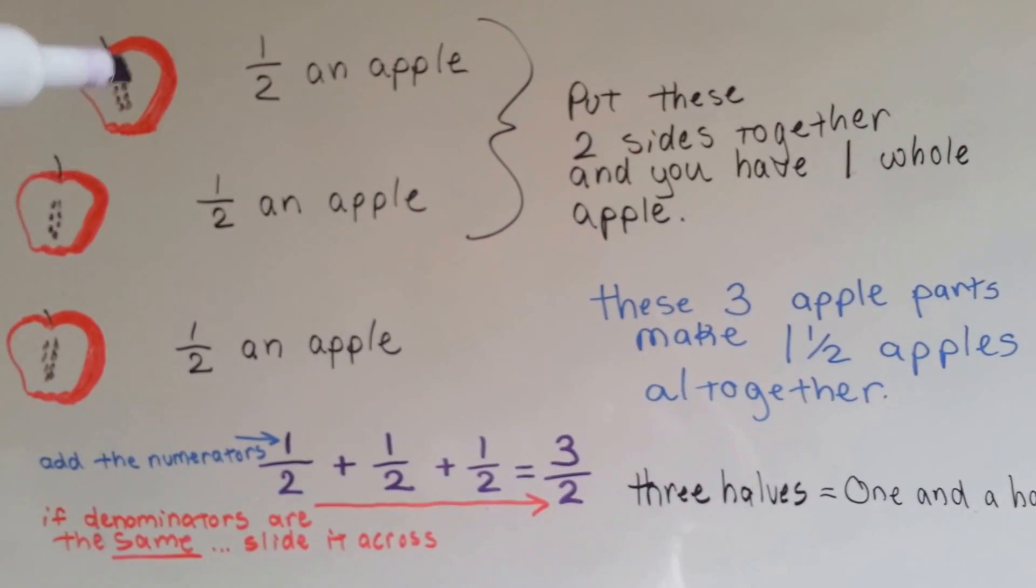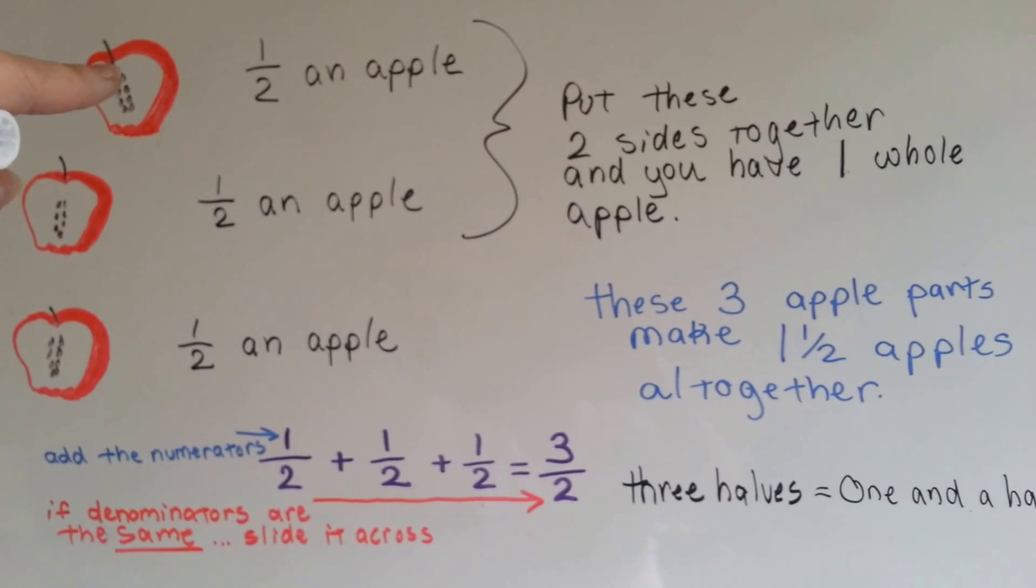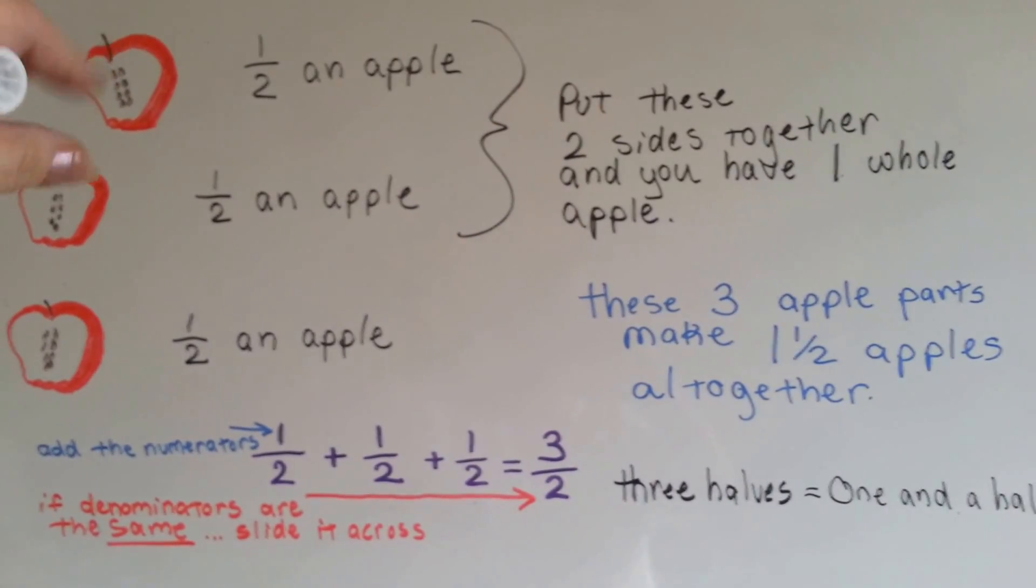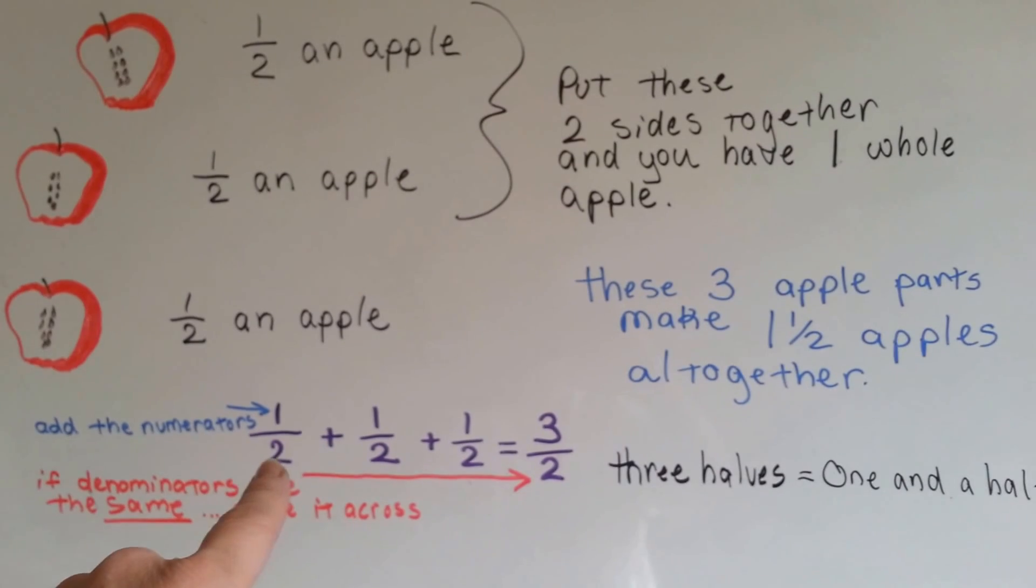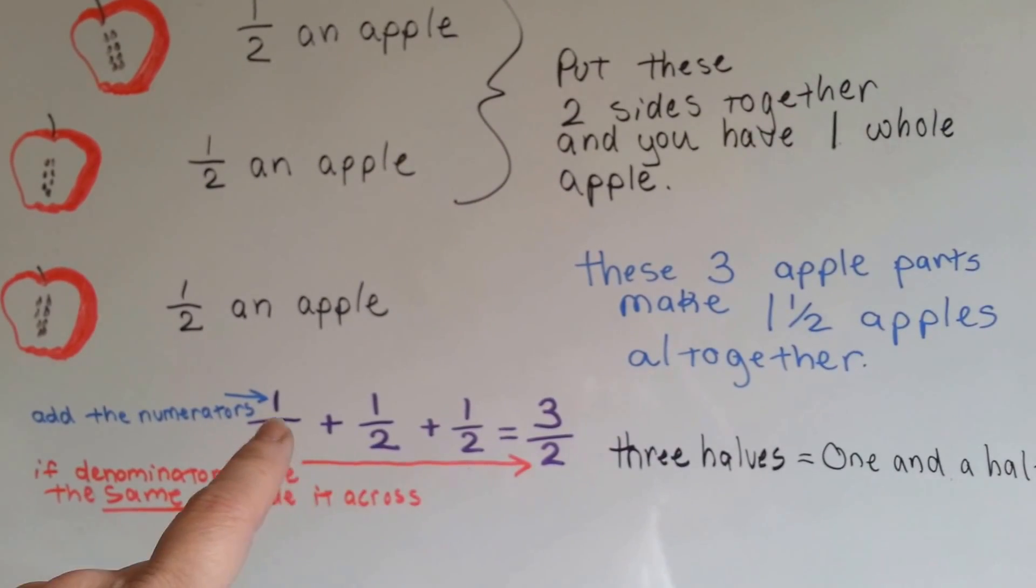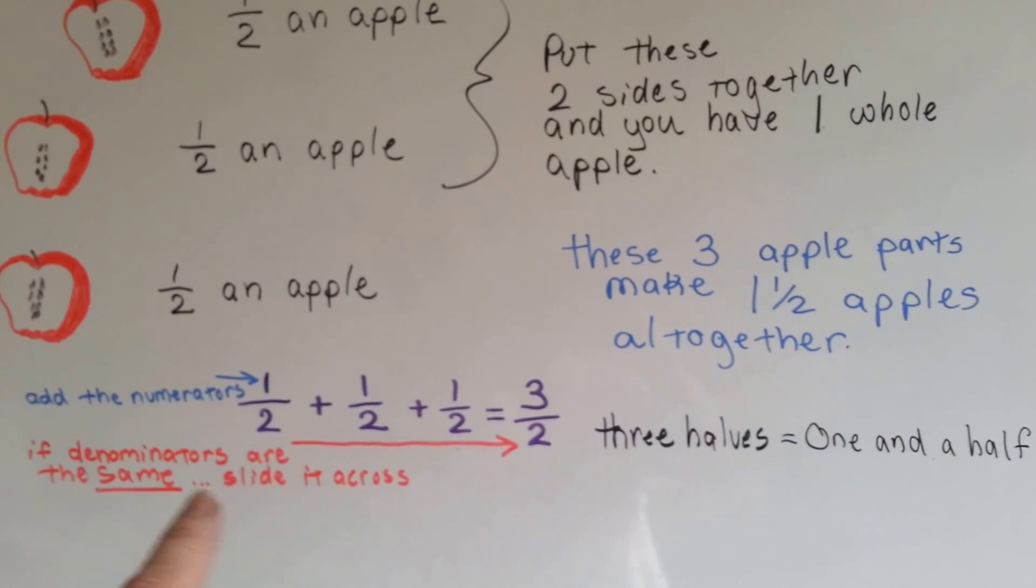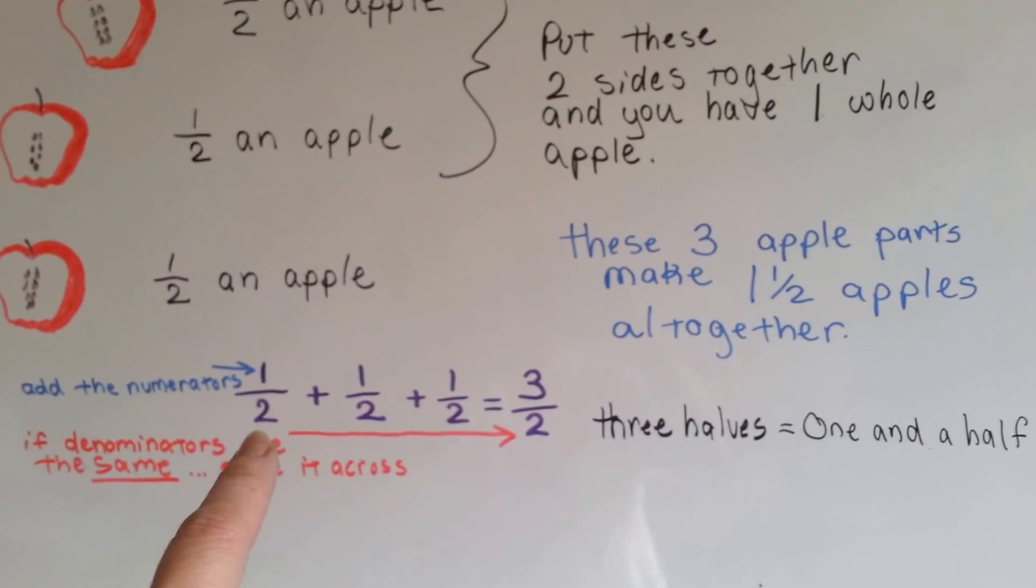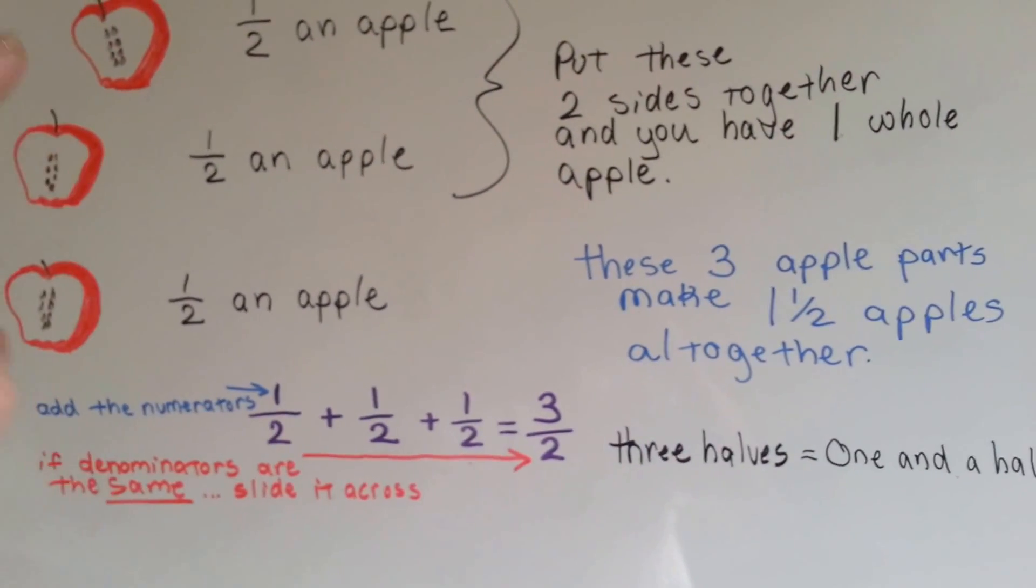If you took these two half apples and turned this one around and stuck it back on here and put it back together, you would have a whole apple with a half left over. Half plus a half plus a half is one, two, three, and that's the three as the numerator. And when the denominators are the same on the bottom, you just slide it across and put the two there. So, you have three halves.